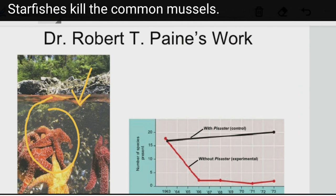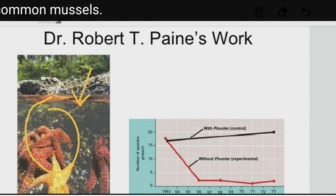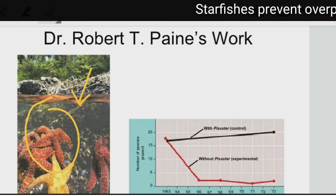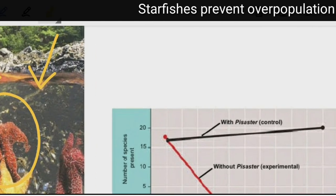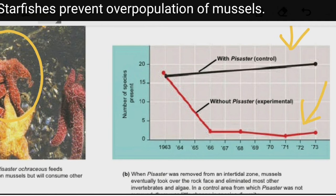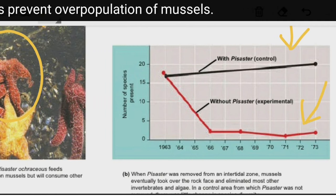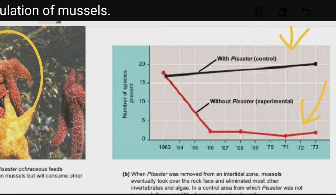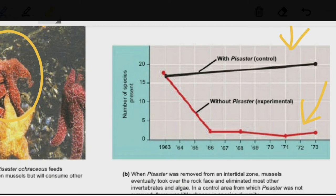In the absence of this particular species of starfish, mussels eventually take over the rock face and eliminate most other invertebrates and algae. Looking at the graph, the number of species in the ecosystem is far greater in the presence of the starfish than in its absence, where species count drops significantly.